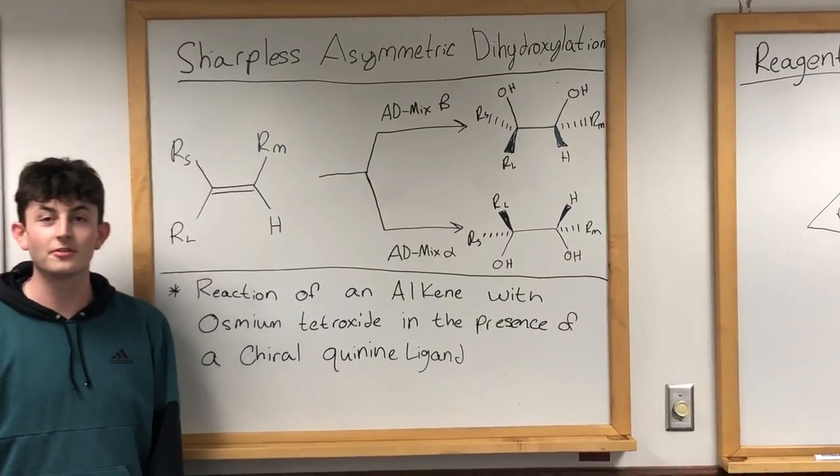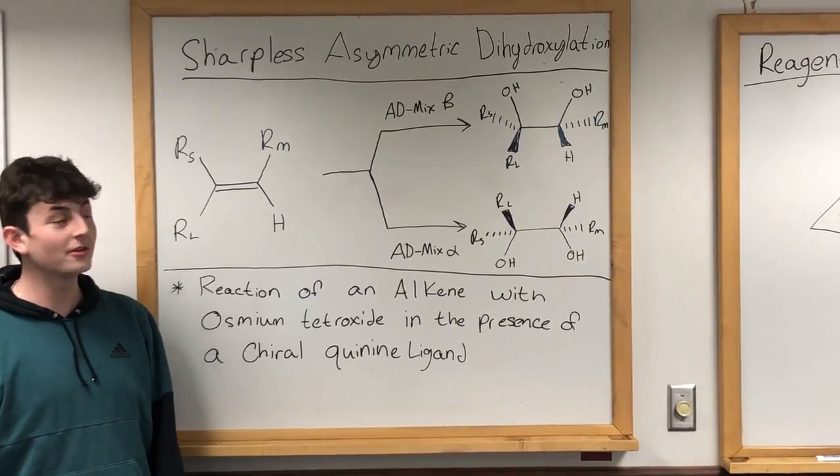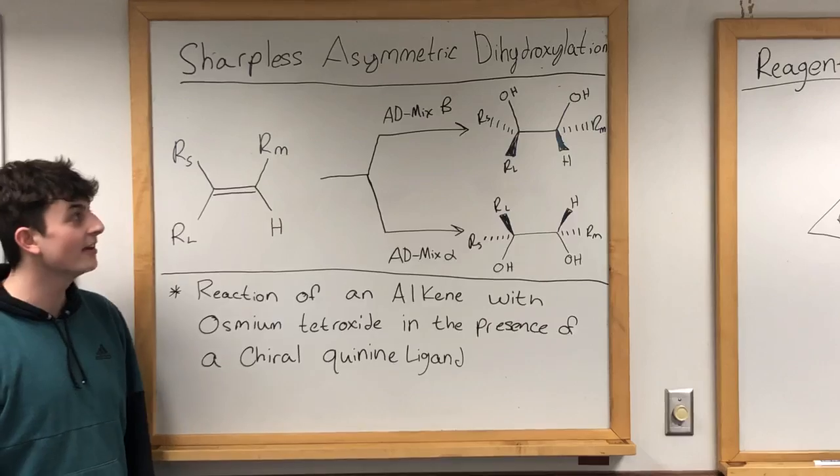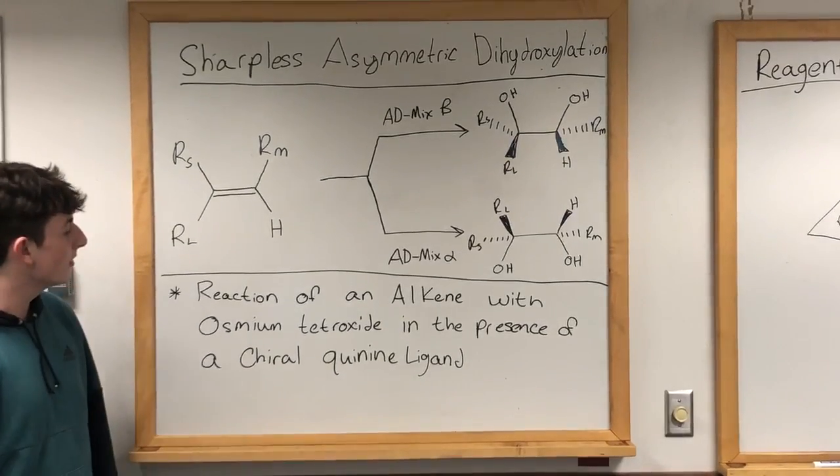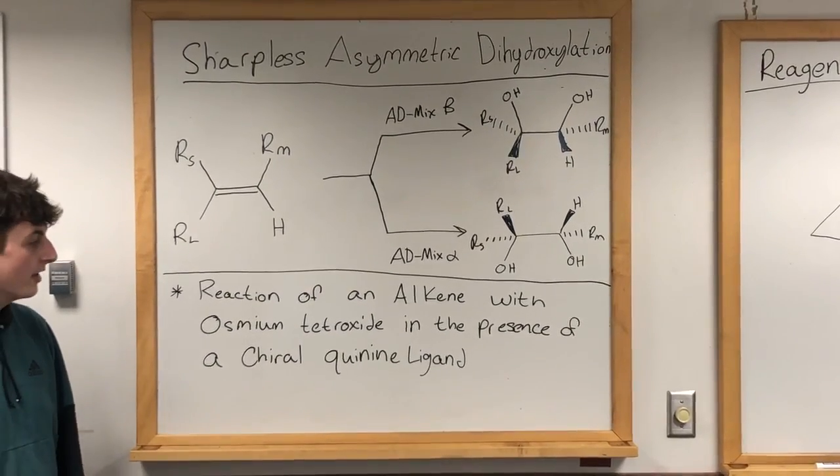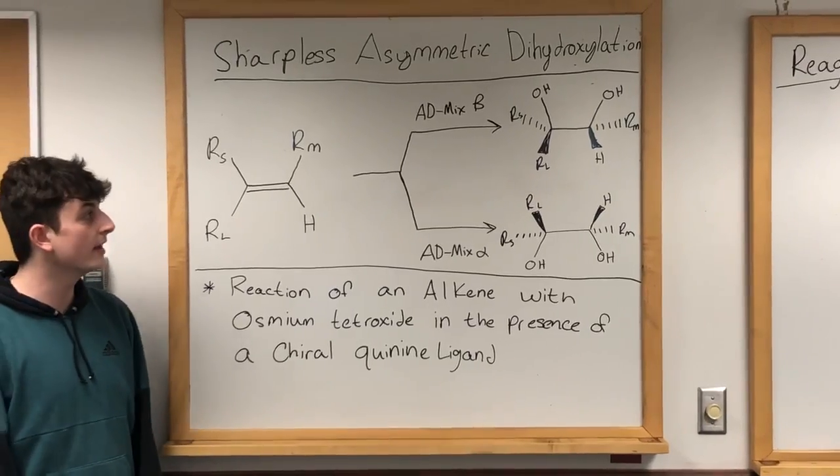Hello everybody, my name is Christopher Leucor and today I'm here to teach you about the Sharpless Asymmetric Dihydroxylation. This is the reaction of an alkene with osmium tetroxide in the presence of a chiral quinine ligand.